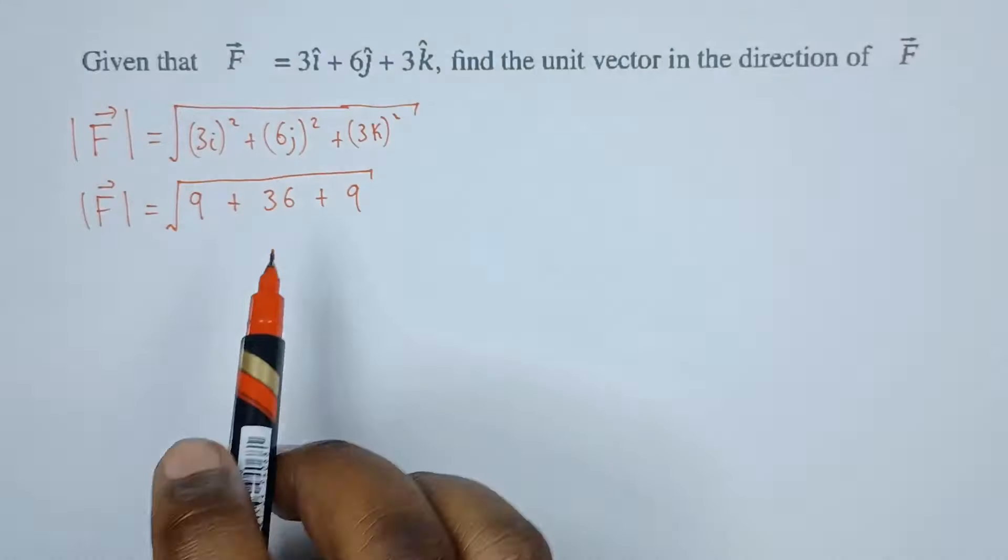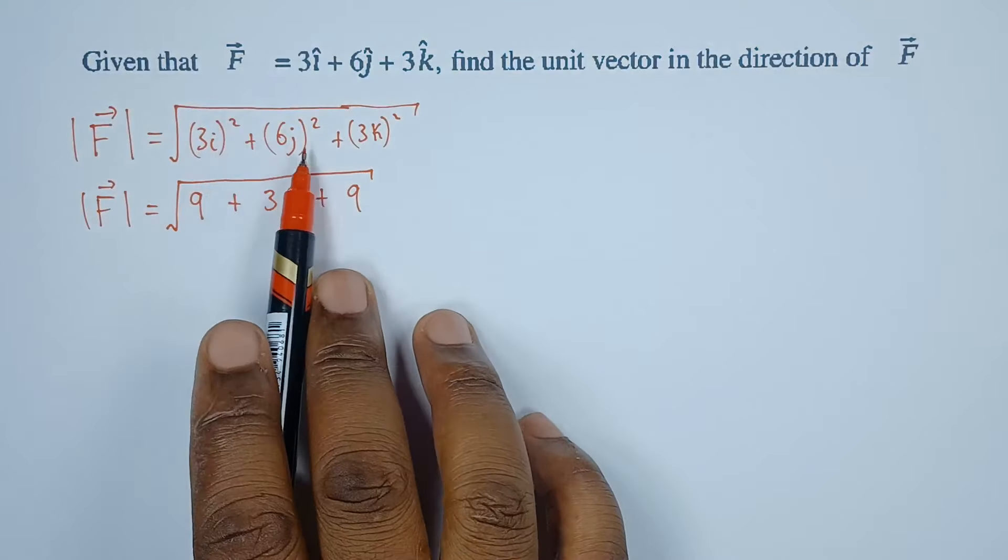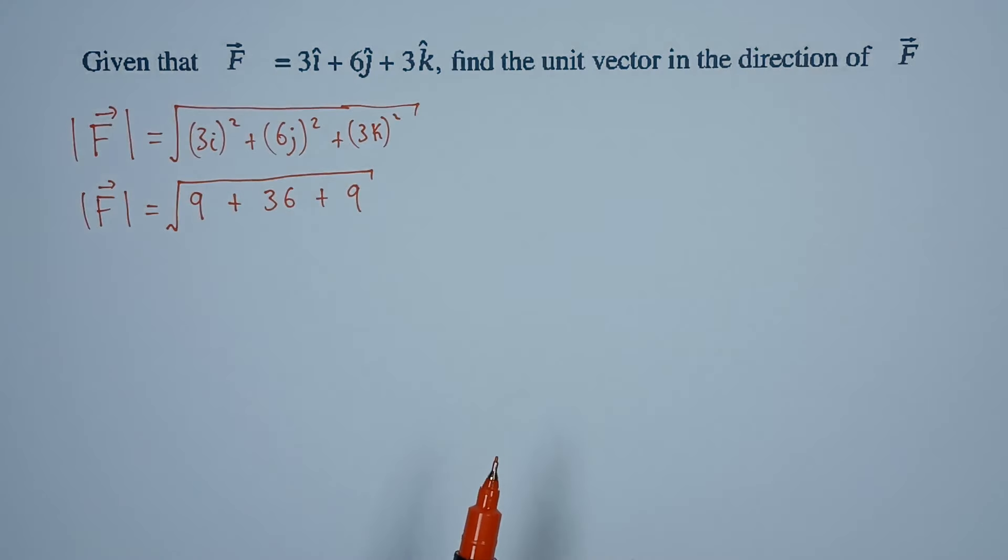Remember, 3i squared is 9. i squared is 1, j squared is 1, k squared is 1.